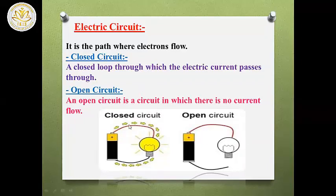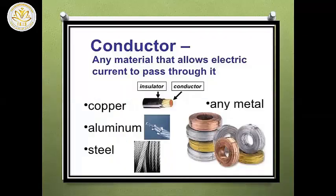As you can see, the electric current should flow in closed paths or a closed circuit. You can see the closed circuit here — the battery with the wire and the lamp — and the electron movement, or electric current, must move in a closed circuit, not an open circuit.